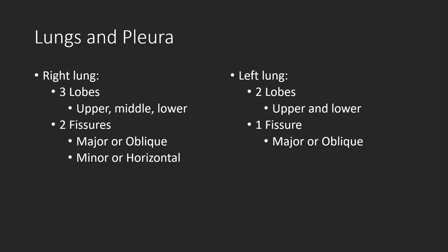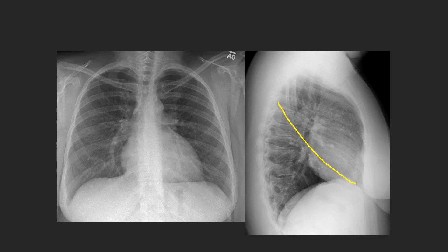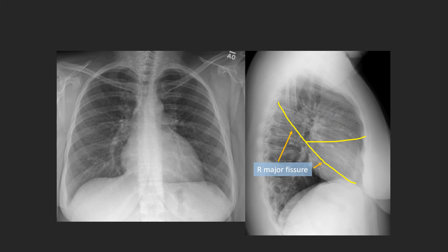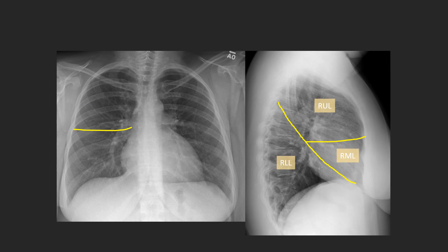The right lung has three lobes — upper, middle, and lower — separated by two fissures: the major or oblique, and the minor or horizontal. The left lung has two lobes, upper and lower, and one fissure, the major or oblique. The right major fissure is easy to see on the lateral view but typically not seen on the frontal view due to its oblique orientation. The right minor fissure arises anteriorly from the major fissure with a very horizontal course and can sometimes be seen as a thin line on the frontal view. The right upper lobe is anterior and above the minor fissure, the right middle lobe is below the minor fissure and anterior to the major fissure, and the right lower lobe is the most posteriorly located.